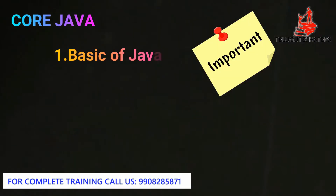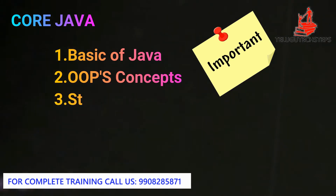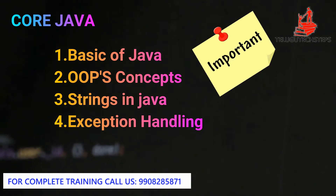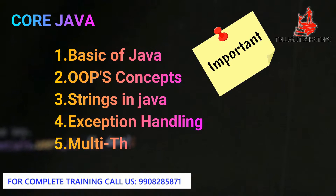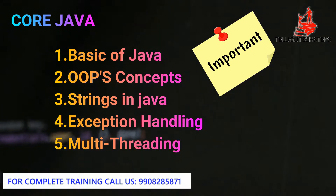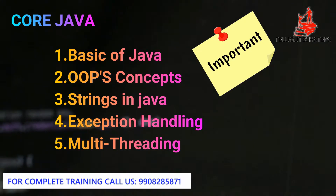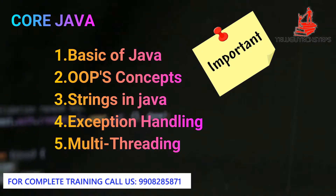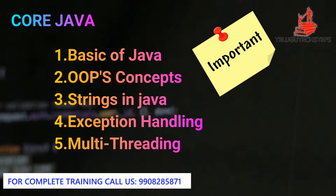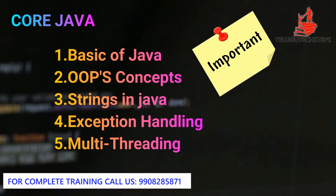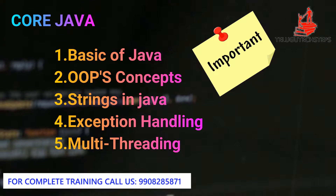Let's see one of the most important classes in core Java. In core Java, we can divide the content into five modules: basics, loops, strings, exception handling, and multithreading. In basics, there will be important classes. We will go through these step by step, starting with the first program in Java.